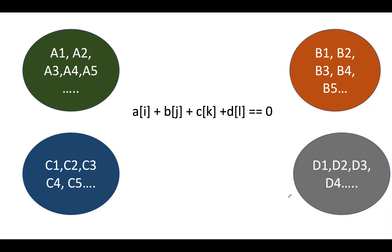Let's understand the question and represent it in mathematical format. We are given 4 arrays a, b, c, and d with various elements. If I need to represent this equation mathematically: a[i] + b[j] + c[k] + d[l] should all sum up to give 0. This formula itself gives you the intuition for the naive approach, which is order of n to the power 4.